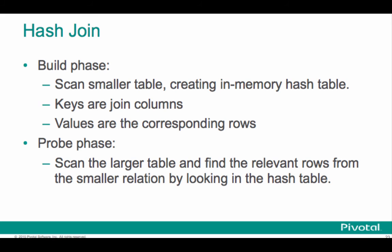In a hash join, we've got a couple of phases. We call the initial part the build phase, where we take the smaller table, scan it, and create an in-memory hash table. In this hash table, the keys are going to be the join columns and the values are the corresponding rows from that table. Then we have what we call the probe phase. In this phase, we scan the larger table and find the relevant rows from the smaller one just by looking up the rows in the hash table using the key, the join key. And this is very fast because in-memory hash tables are fast for looking values up.